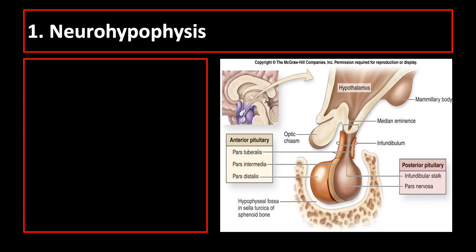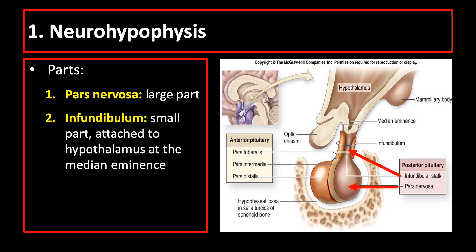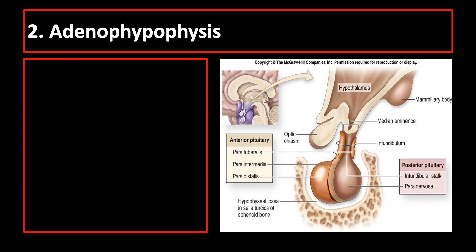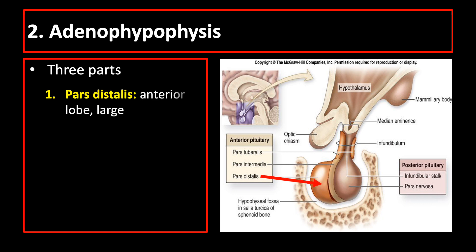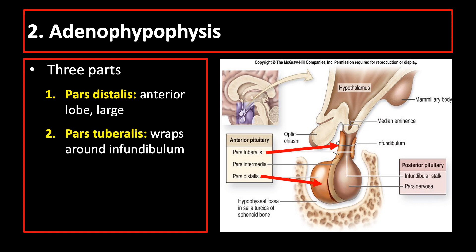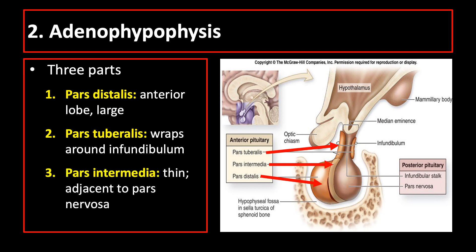The neurohypophysis retains many histologic features of brain tissue. It has two parts: the pars nervosa, which is the large part of the posterior pituitary gland, and the infundibulum, which is the small part attached to the hypothalamus at the median eminence. The adenohypophysis, derived from oral ectoderm, has three parts: the pars distalis (most anterior and largest), the pars tuberalis (wraps around the infundibulum), and the pars intermedia (thin, adjacent to the pars nervosa).